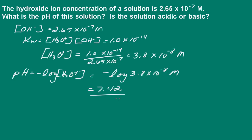Now we're asked, is the solution acidic or basic? Remember, a solution that has a pH of 7 is neutral, a pH lower than 7 is acidic, and a pH higher than 7 is basic. So the solution is slightly basic.